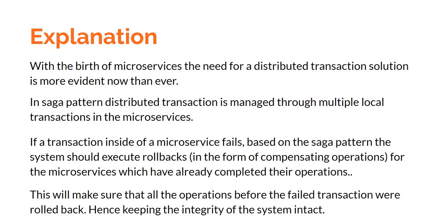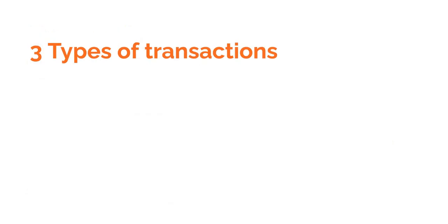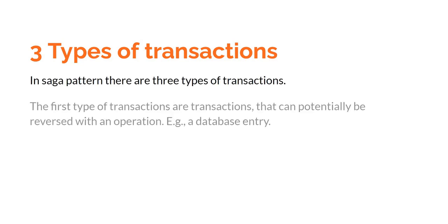Atomicity is also taken care of by this implementation. Based on the requirement, we have to decide whether a transaction is critical or not. There are three types of transactions we can define. The first type are transactions that can potentially be reversed with a compensating operation — for example, a database entry. If we had a database transaction as part of a microservice and another microservice failed, the first microservice can always do a compensating transaction. This type is called a compensable transaction.